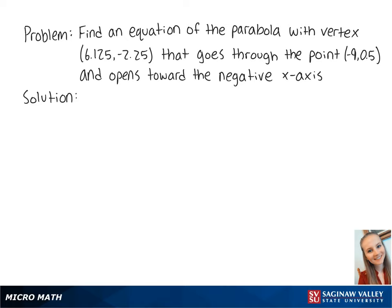For this problem, we want to find an equation of the parabola with vertex (6.125, -2.25) that goes through the point (-9, 0.5) and opens towards the negative x-axis.